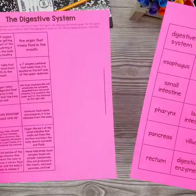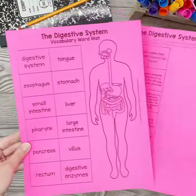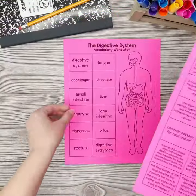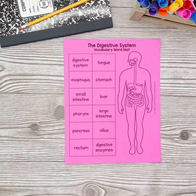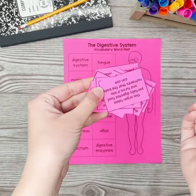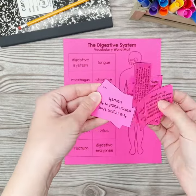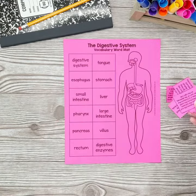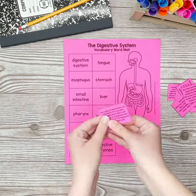To prepare the printable vocabulary mats, print pages on the same color of cardstock. If you plan to use many vocabulary mat sets, you'll want to choose a different color for each topic you teach.